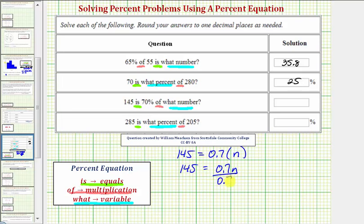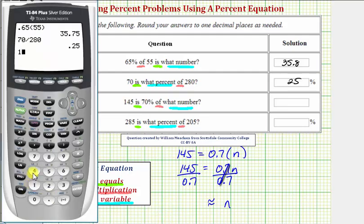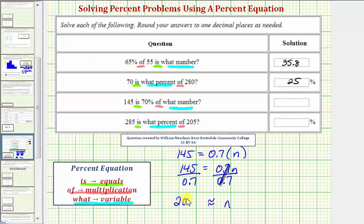So we have 145 equals 0.7n, so we divide both sides by 0.7. We'll probably have to round here. 145 divided by 0.7 to one decimal place would be approximately 207.1. 145 is 70% of approximately 207.1.